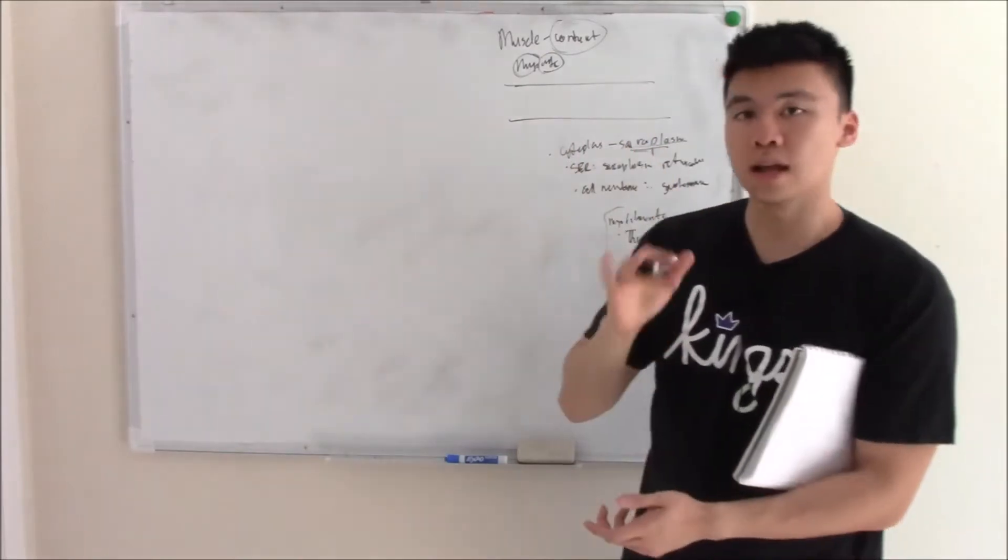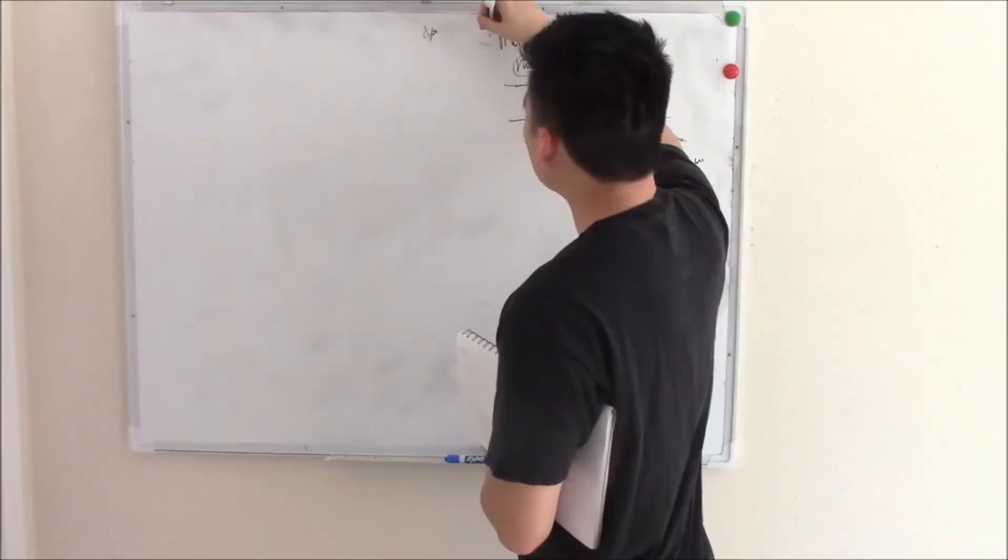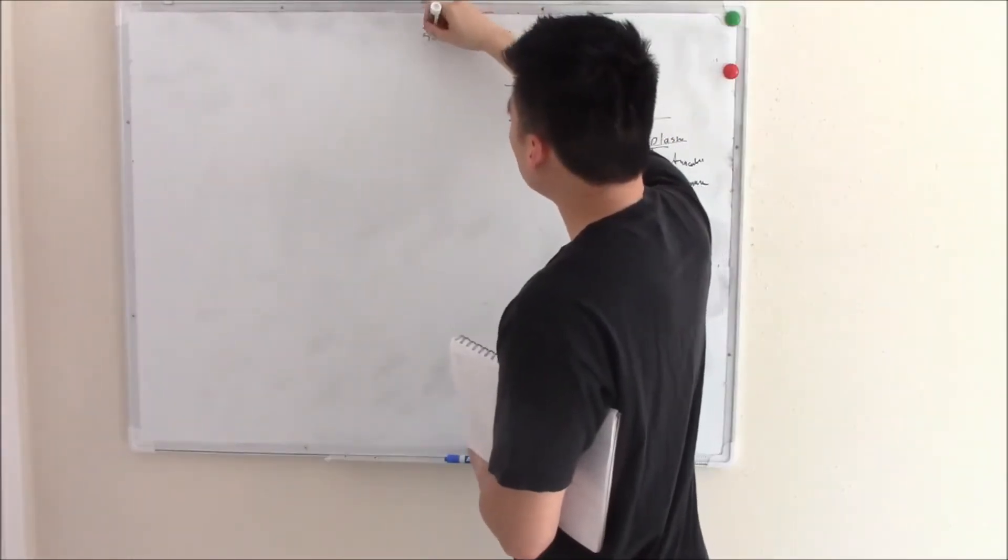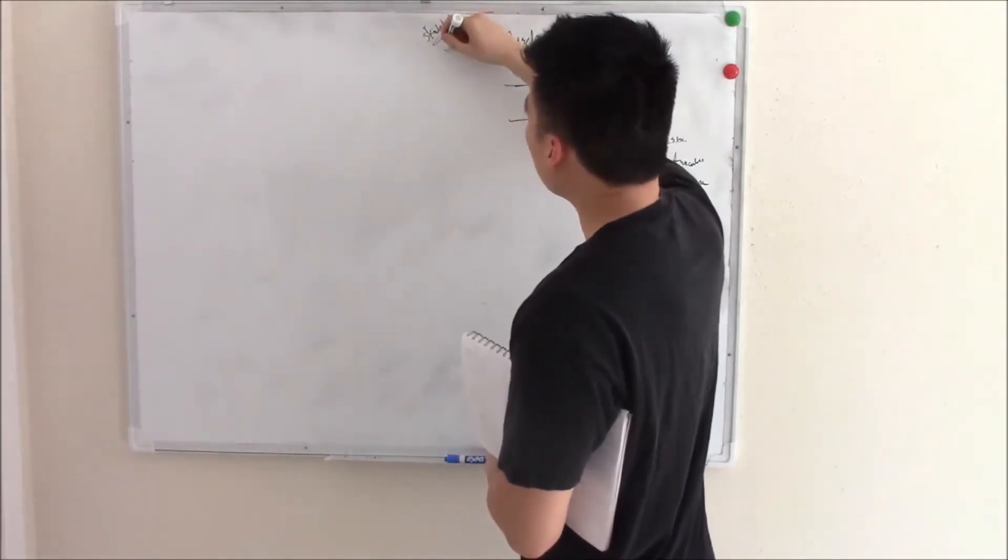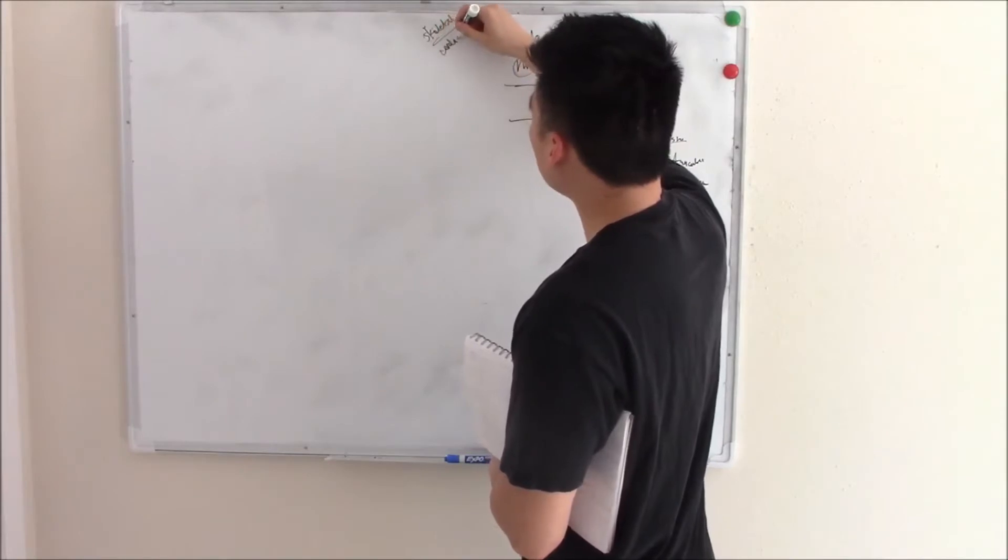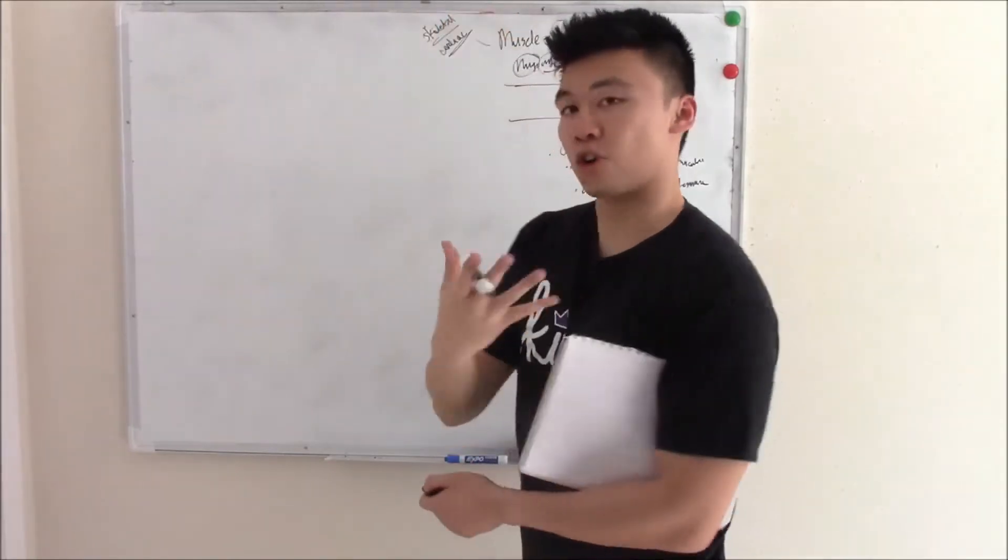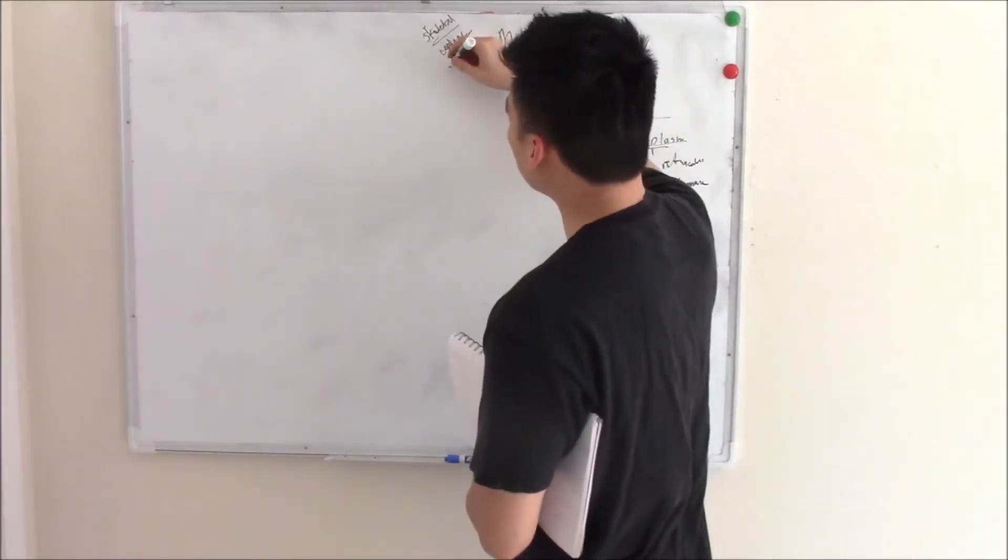Before we go into all that, there are a few types of muscles. You can have skeletal muscle that attaches to your skeleton, cardiac muscle seen in your heart, and smooth muscle.